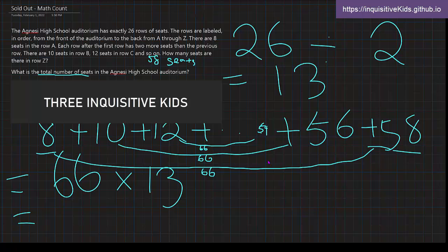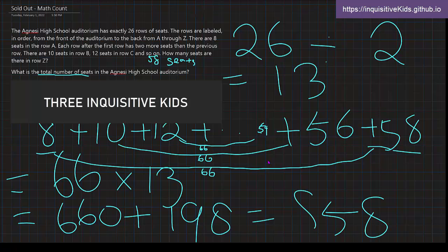Alright, and all we have to do is solve. So, that would be equal to 660 plus 198. Then, we would be doing addition. So, 8 in the ones place, 5 and 8. So, 8, 5, 8. Total number of seats would be 858 seats in the school auditorium.